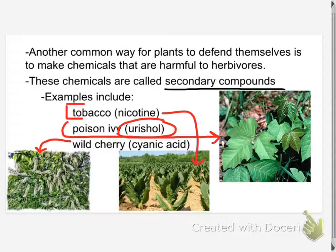These are all secondary compounds. Wild cherries make a nice little secondary compound too — cyanide. Have you ever heard of cyanide? It's a deadly poison. It'll kill bed bugs, fleas, rabbits, dogs, cows — it'll kill anything.